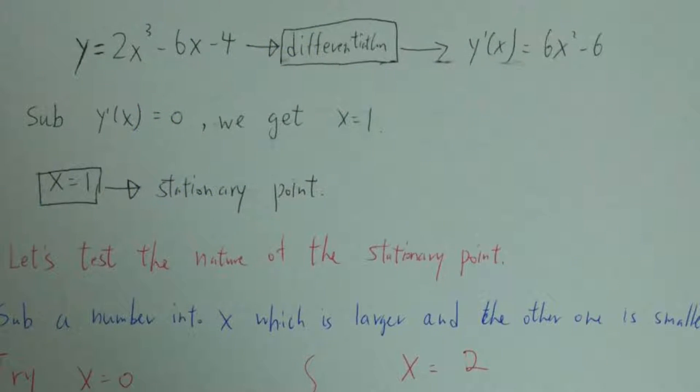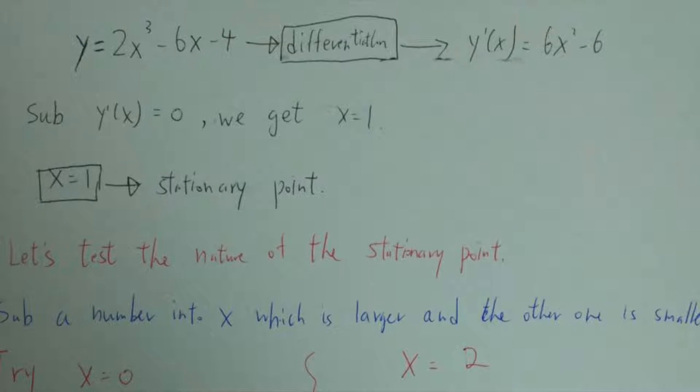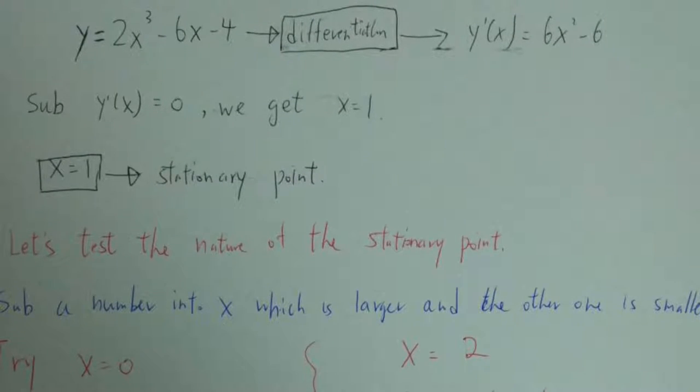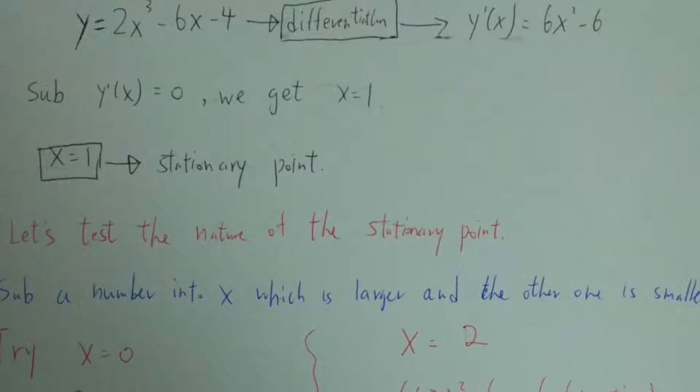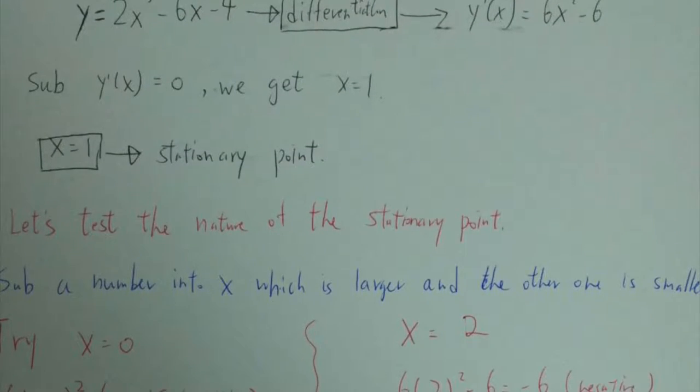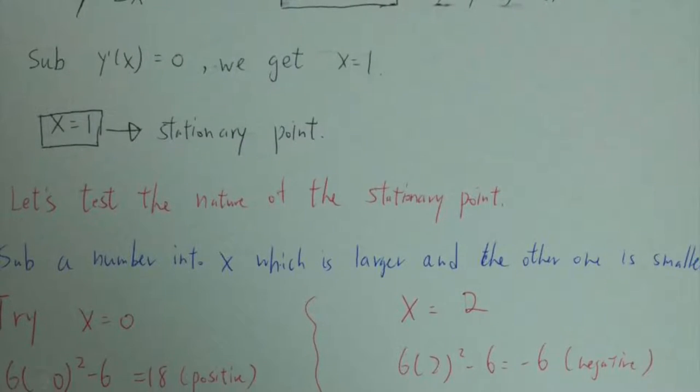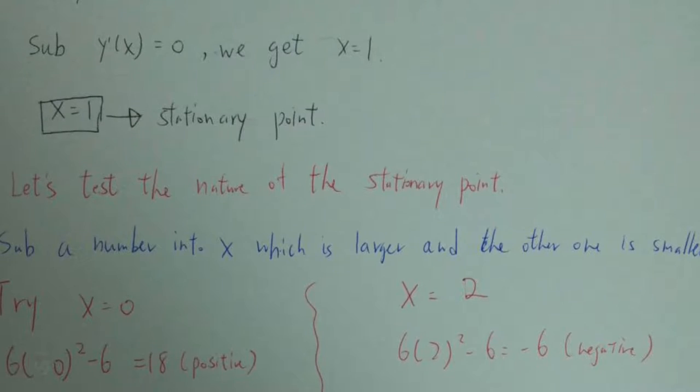I am going to introduce how to find the stationary point of a parabola. First of all, stationary point is the point which is the slope equal to 0 at x value. Before start, we need to know the derivative of a parabola.